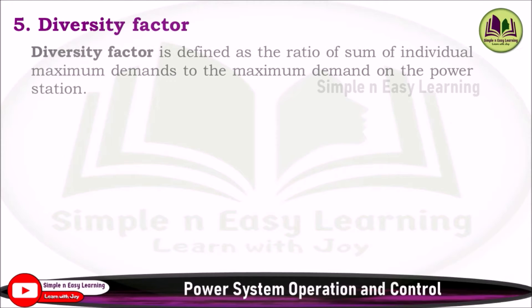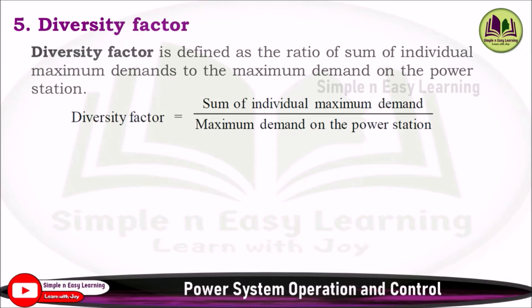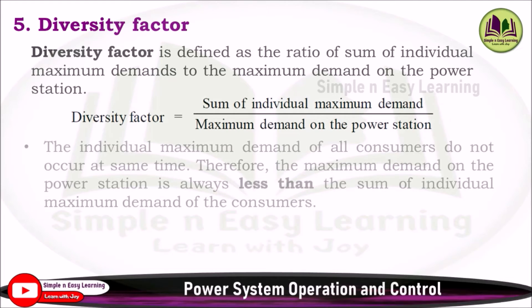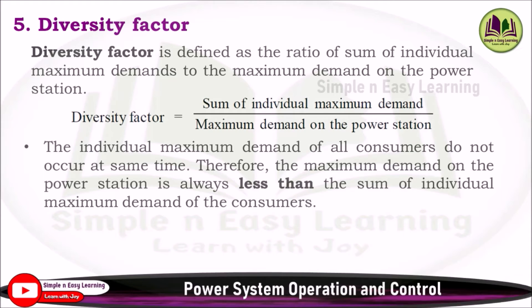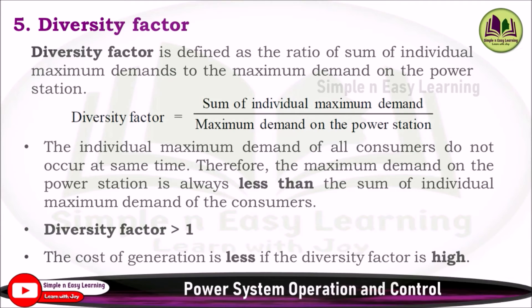Fifth: diversity factor. It is defined as the ratio of the sum of individual maximum demands to the maximum demand on the power station. Diversity Factor = (Sum of individual maximum demands of all consumers) / (Overall maximum demand on power station). Since individual maximum demands of consumers do not occur at the same time, the maximum demand on the power station is always less than the sum of individual maximum demands. Therefore diversity factor is always greater than 1. If diversity factor is high, the cost of generation is less.